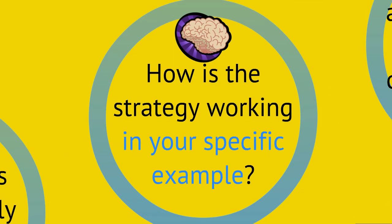Next, you would want to explain how the strategy is working in the specific example you gave. You identify a strategy being used, you give an example of that strategy being used from the text, and then you need to interpret and explain how that specific example — how the strategy is being used within it.